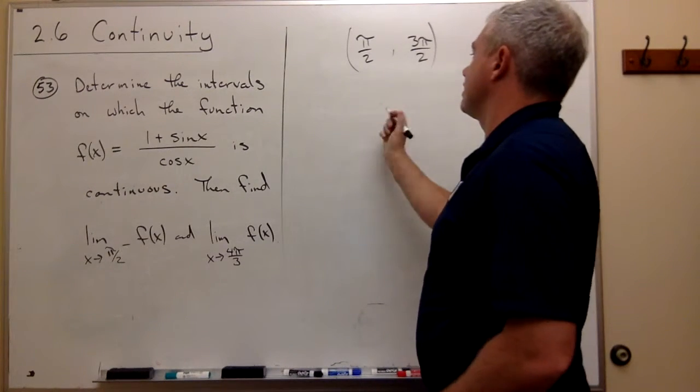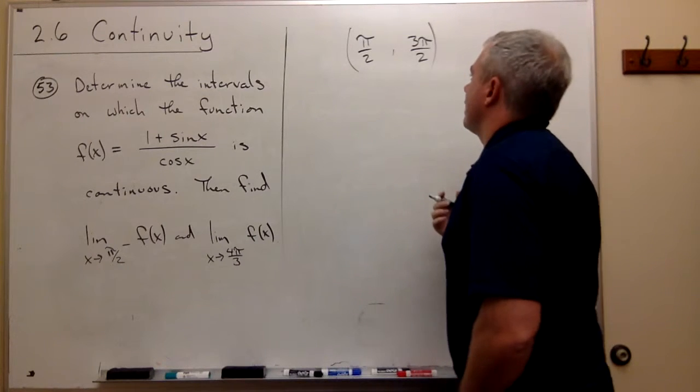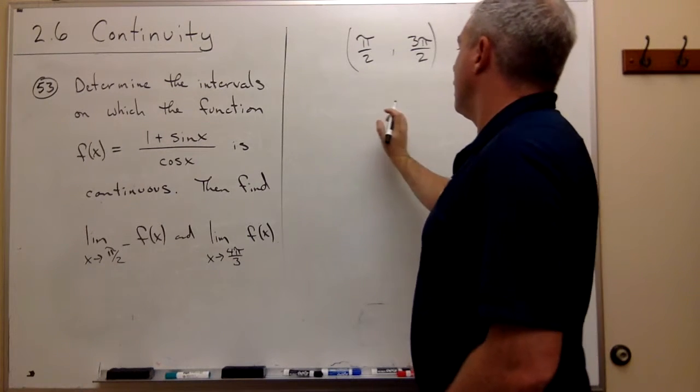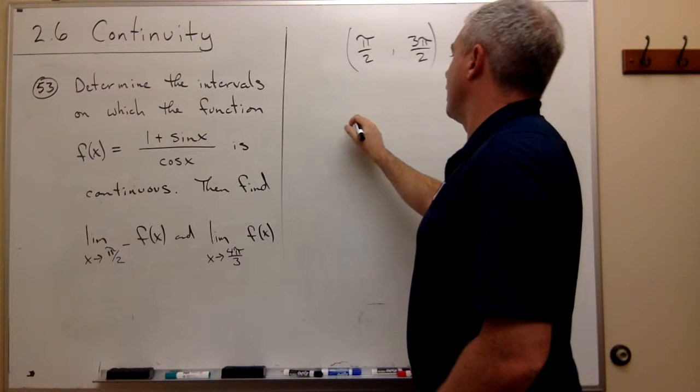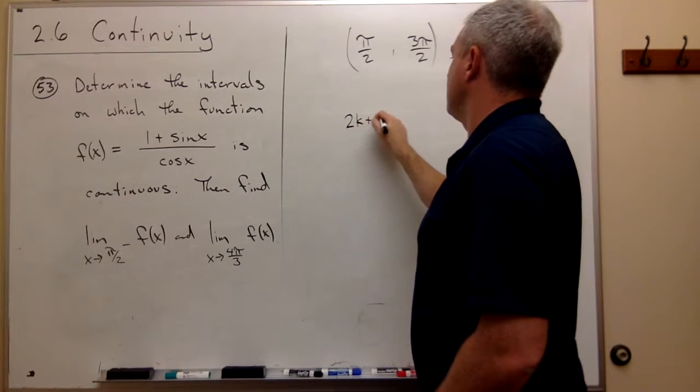So I would do something like this. We could say, okay, an odd number. Well, what's an odd number? Maybe like 2k plus 1.